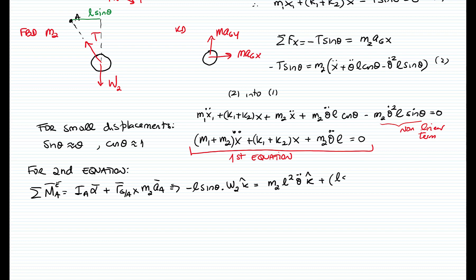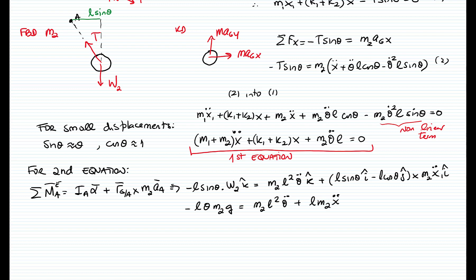The mass moment of inertia term is M2 L² theta double-dot in the positive k-direction. The distance from A to G is L sine of theta in i minus L cosine of theta in j, crossed with M2 times the acceleration of point A. Performing this cross product yields the second equation of motion. Writing everything on the left side gives us the equation for the pendulum — our second equation of motion.